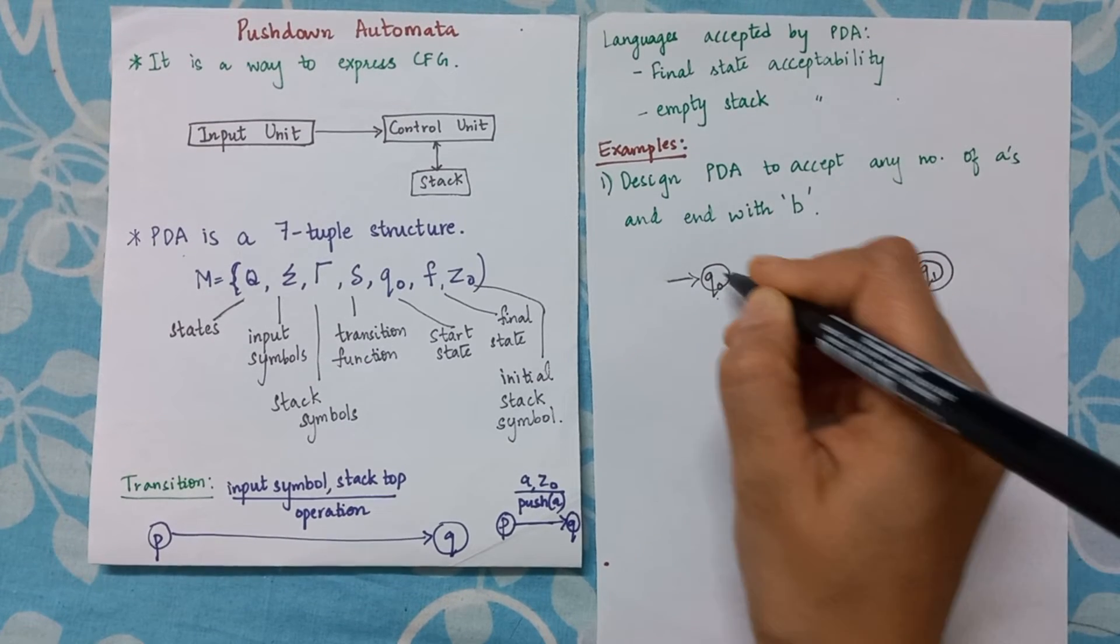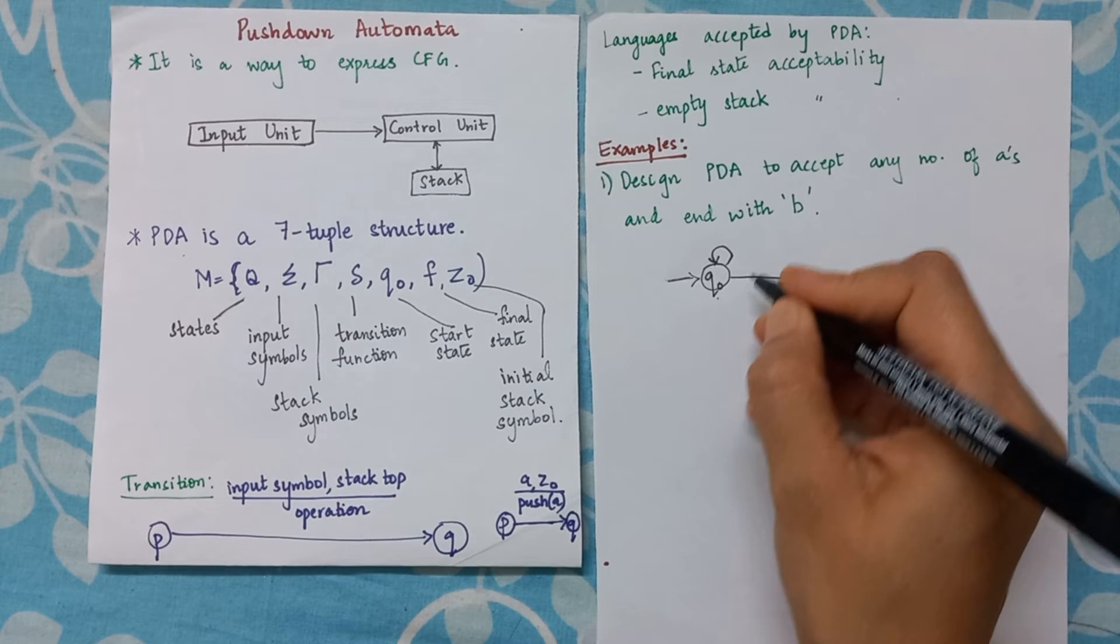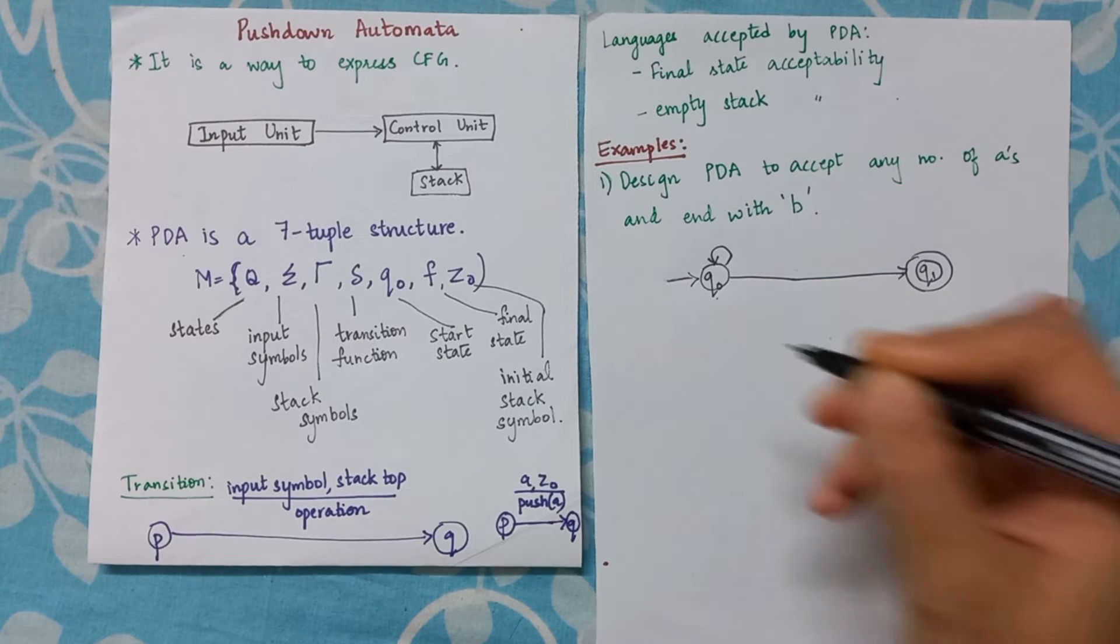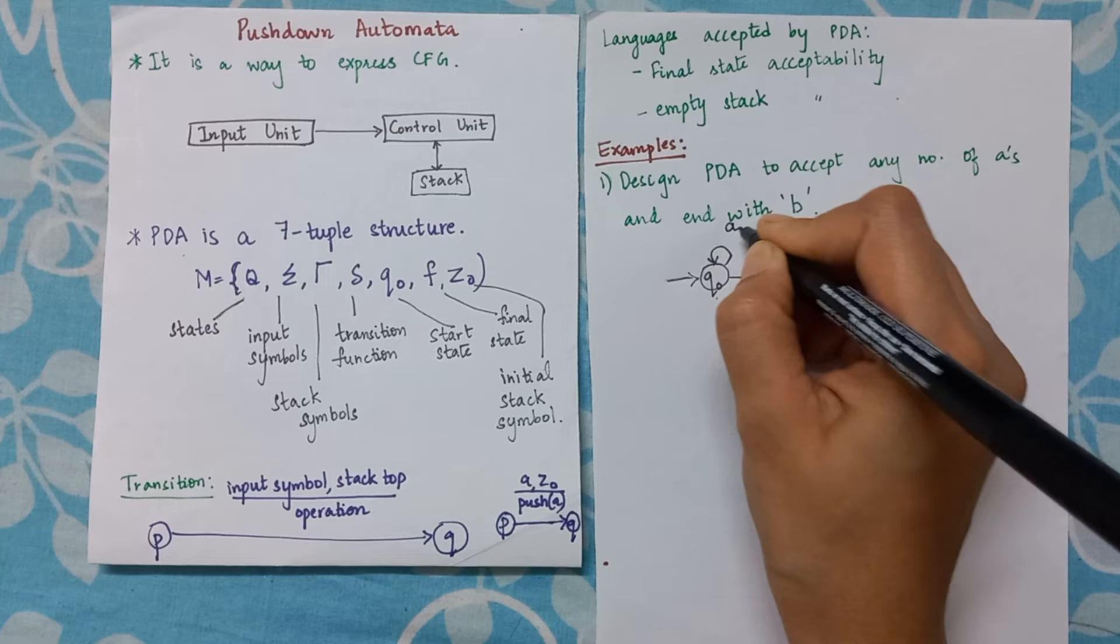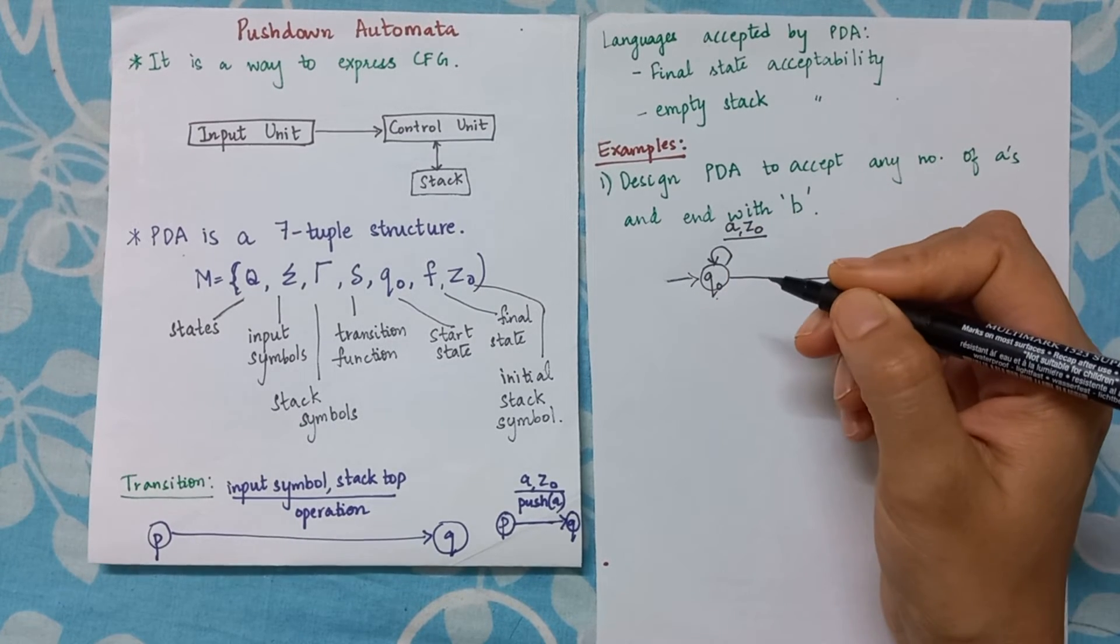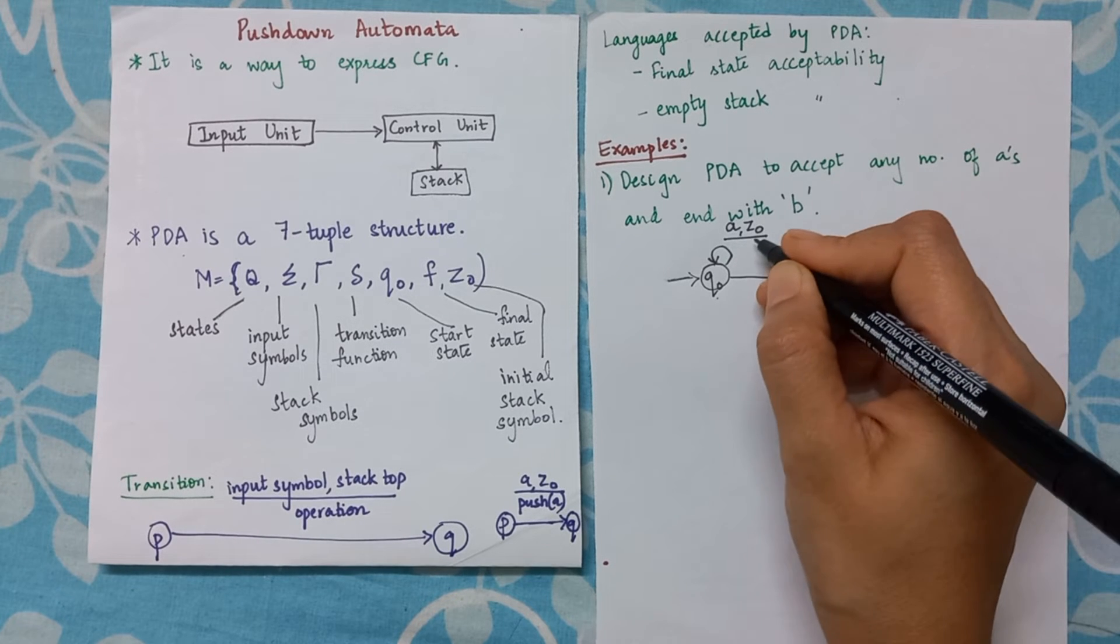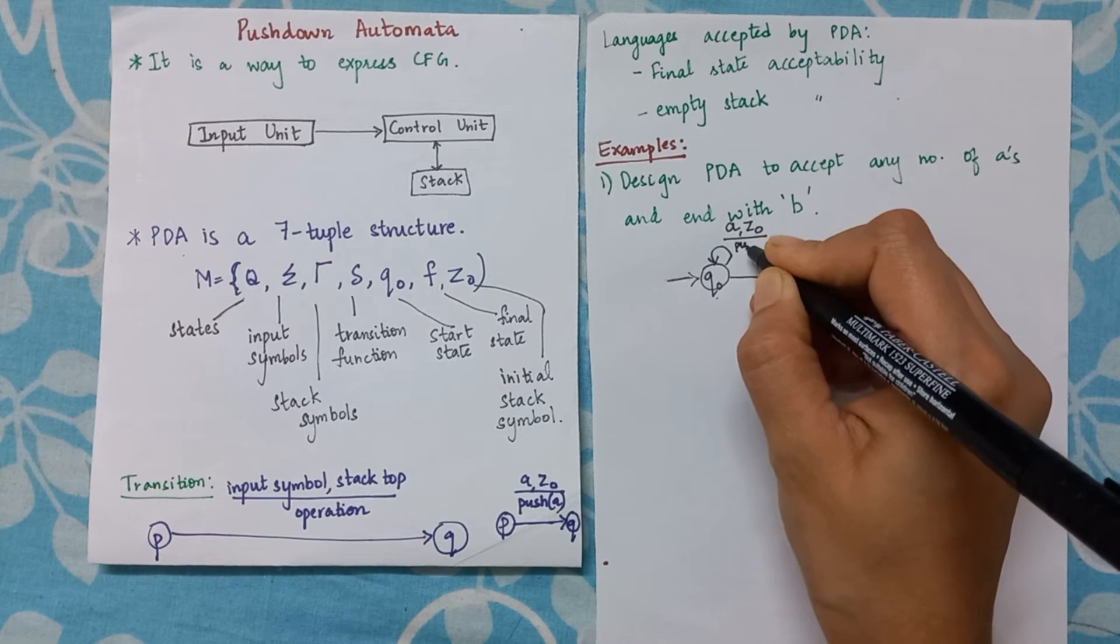So when I insert 'a' for the first time, the stack will have Z0 and I will push 'a' onto the stack.